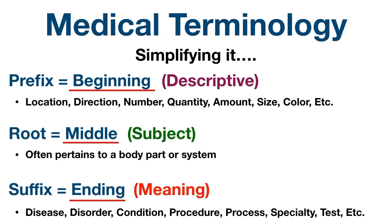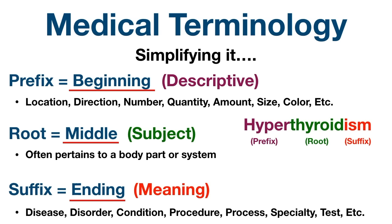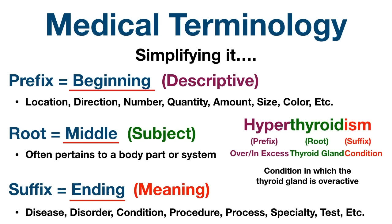Let's take a look at an example — hyperthyroidism. We can see the word has a beginning (the prefix), a middle (the root), and an end (the suffix). Hyper means above normal or an excess; thyroid refers to the thyroid gland; and -ism describes a condition. So hyperthyroidism is a condition in which the thyroid gland is overactive and produces too much hormone. Once you know the meaning of these common word elements you can put them together to figure out what the medical term means.